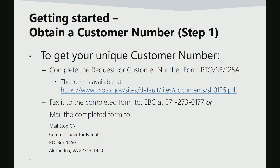The first step to getting started to file an application is to obtain a customer number. A customer number is a five or six digit number that represents the applicant's address. It allows for easy correlation of filings and correspondence with a single mailing address. One of the benefits of using a customer number is that it eliminates typographical errors with an address. To obtain a unique customer number, applicants should complete Form SB-125. The form can be downloaded from the web link provided.